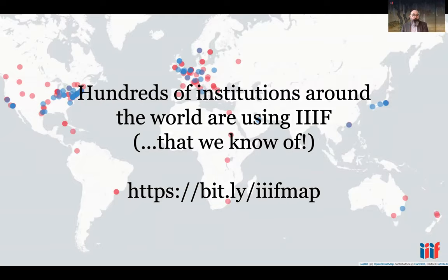To give you a sense of where this is all happening, we have this map. There are hundreds of institutions we know about around the world making use of IIIF, and certainly hundreds more not represented here. The dots in blue are members of the IIIF Consortium — institutions that have taken the step of financially supporting outreach, events like this conference, and work to help integrate IIIF at institutions globally.